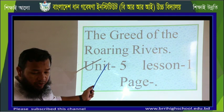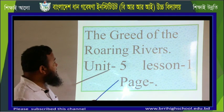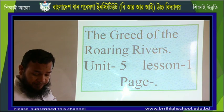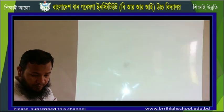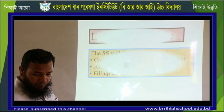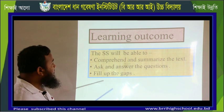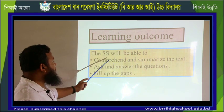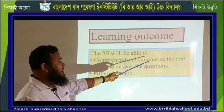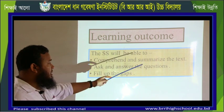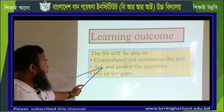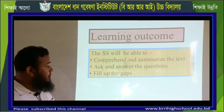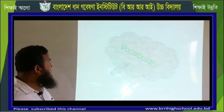Our topic is 'The Grid of the Roaring Rivers,' Unit 5, Lesson 1. After the completion of this topic, students will be able to comprehend and summarize the text, ask and answer questions, and fill in the gaps. These items will be included in today's lesson.